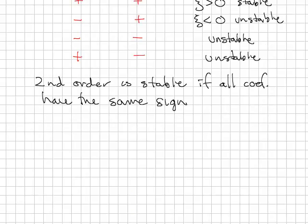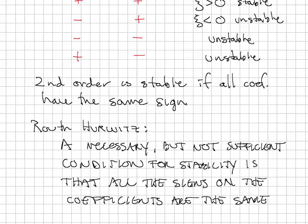For higher order systems, you can do some analysis using what's called Routh-Hurwitz. Routh-Hurwitz stability criteria states that a necessary but not sufficient condition for stability is that all the signs on the coefficients must be the same.